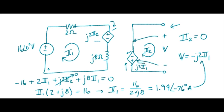Take that value, insert it right there, so we're taking this times minus J2. When you go through the calculation there, you should end up with 3.88 at minus 166 degrees volts.